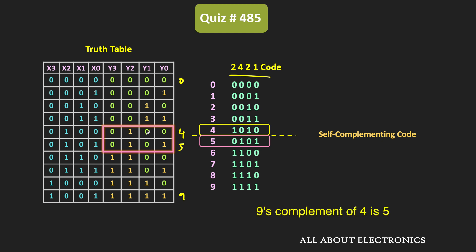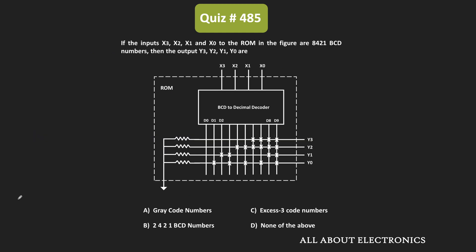Just replacing 1s by 0s and 0s by 1s will not give the complement of number 4. As per the 2421 BCD code, the coding for decimal digit 4 should be 1010, but in this PROM it is 0100. Therefore, the output of this PROM does not satisfy the condition of the 2421 BCD code. Since none of the given options are correct, the answer for this question is D.